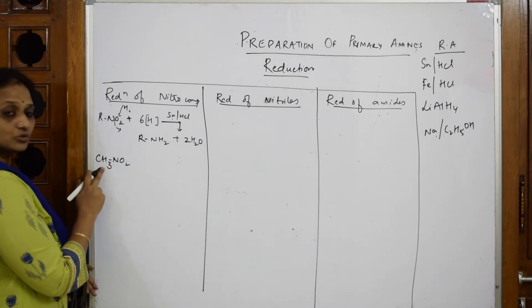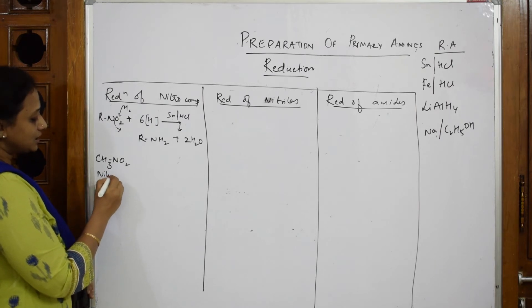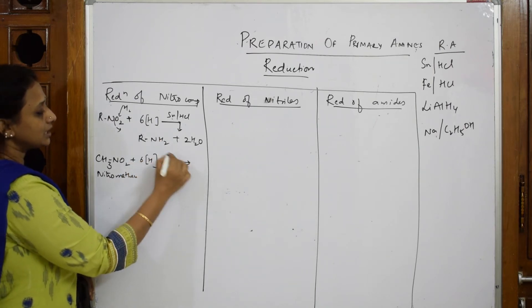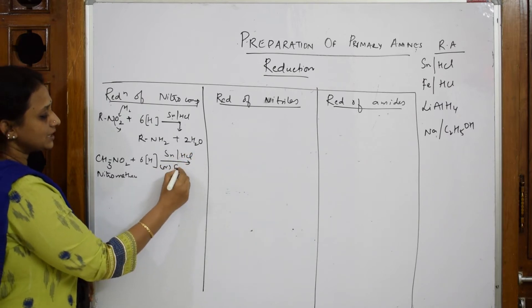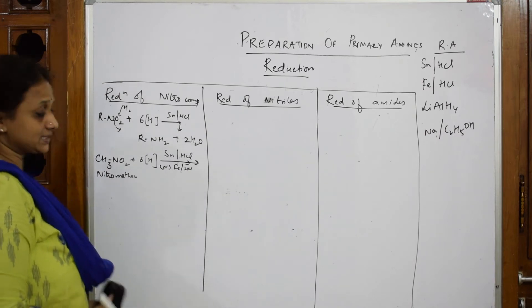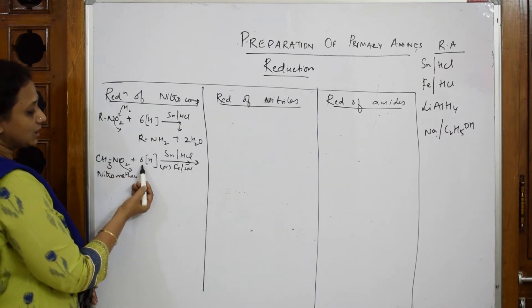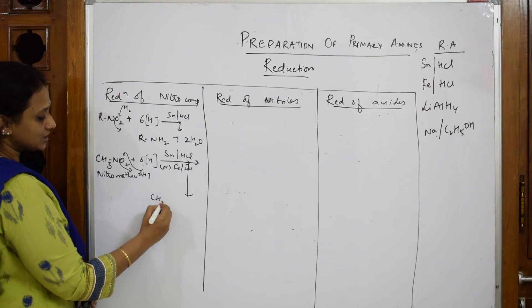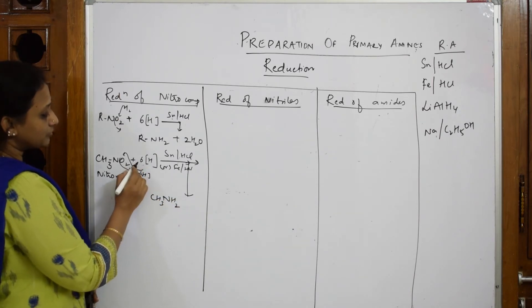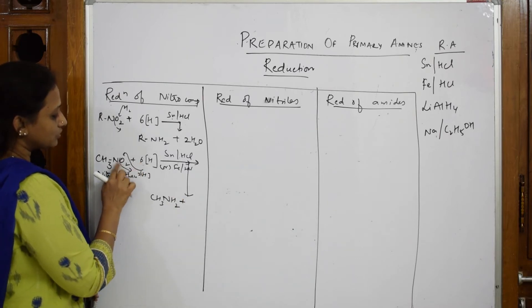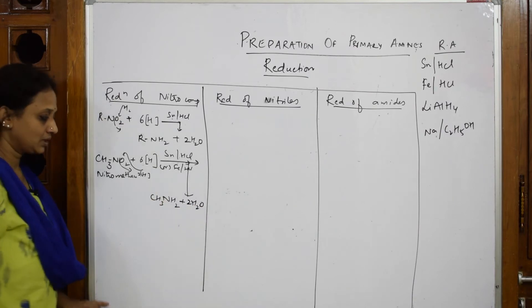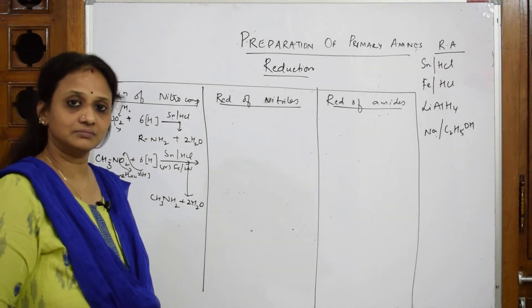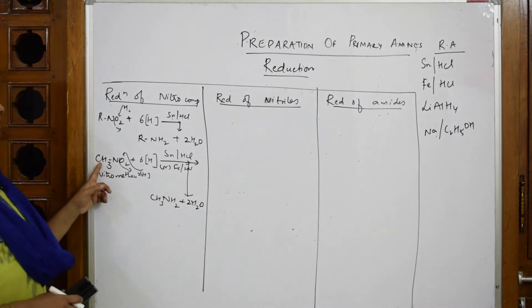For example, take CH₃NO₂ (nitromethane). Add six hydrogens using reducing agent Sn/HCl or Fe/HCl. The oxygen is released, two hydrogens add to the nitrogen, giving CH₃NH₂, and the remaining four hydrogens come out with the oxygen as two water molecules. This gives us methylamine. Remember: nitromethane → methylamine.